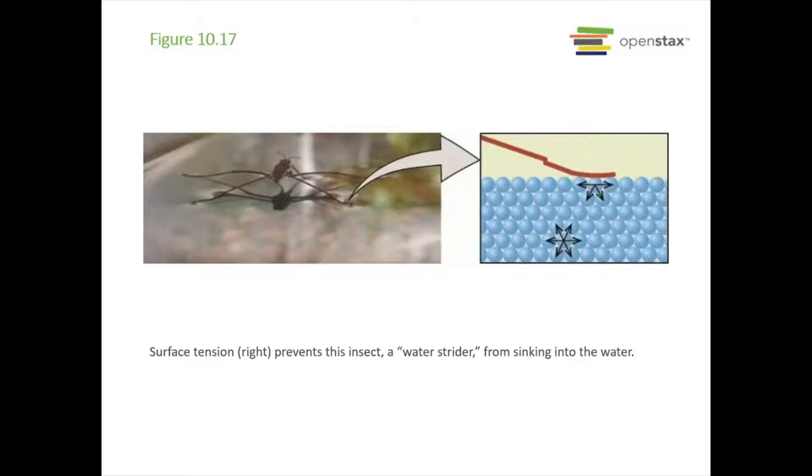Surface tension is also why things like water strider bugs are able to hang out on the surface of water. You can also see this if you take a paper clip and very gently put it on a water surface. It'll float, but if you were to look closely, you would actually see little indents in the water. And you can see that on the surface strider here, these little indents. It's the surface tension holding it up.